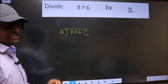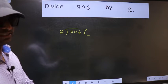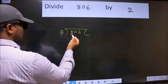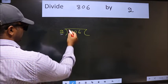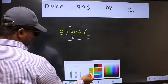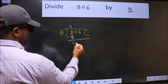This is your step 1. Next, here we have 8 and here 2. When do we get 8 in the 2 table? 2 times 4 is 8. Now we should subtract. We get 0.